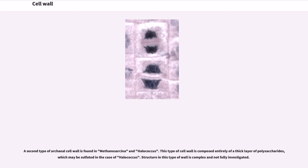A second type of archaeal cell wall is found in Methanosarcina and Halococcus. This type of cell wall is composed entirely of a thick layer of polysaccharides, which may be sulfated in the case of Halococcus. Structure in this type of wall is complex and not fully investigated.